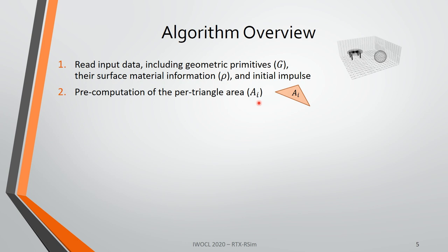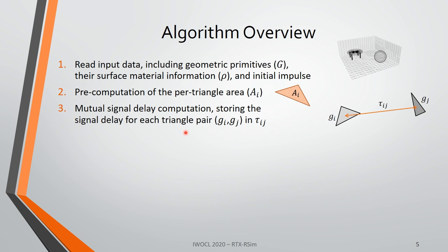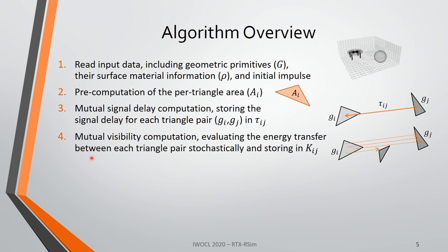The next few steps perform pre-computation required for later steps. First, we pre-compute the per-triangle area A_i for triangle i. Then we compute the mutual signal delay tau_ij for every pair of triangles g_ij. This basically depends on the distance between the triangles and the speed of light in the medium we are simulating. Then we get to a very important and performance-critical step: mutual visibility computation.